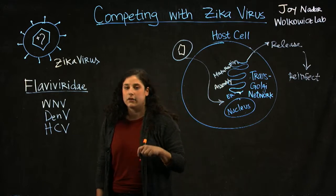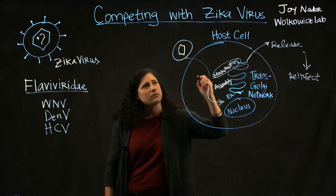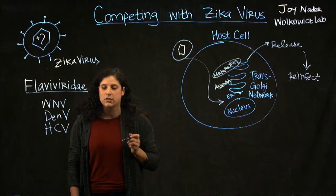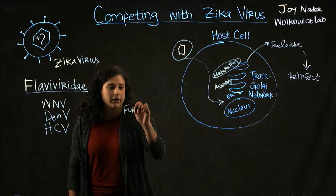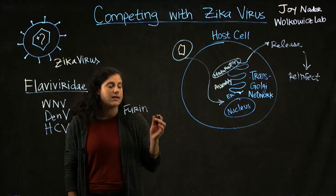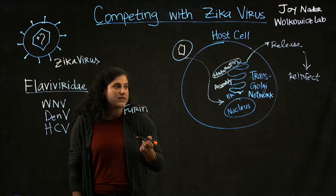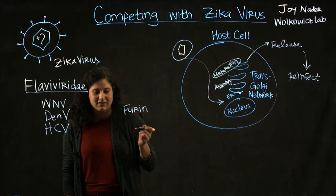I particularly look at the maturation process. With Zika virus, the maturation process involves a host enzyme called Furin. Furin is part of our cells and has many different functions. It's an enzyme that cuts different things within our cells.